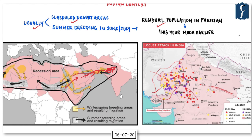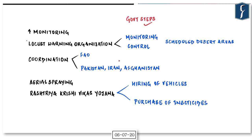We cannot stop locusts from entering our territories, so the only option is increased monitoring. India has an institution called the Locust Warning Organization, which does the work of monitoring and control. This organization comes under the Ministry of Agriculture and has the task of monitoring and control of locust attacks in scheduled desert areas.